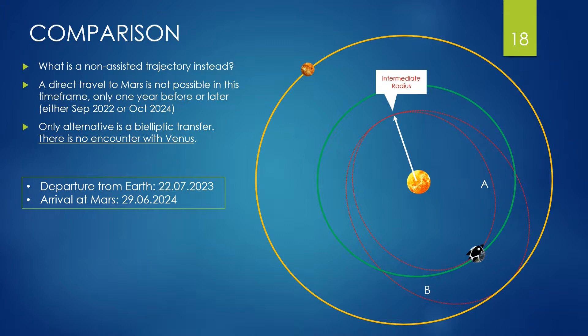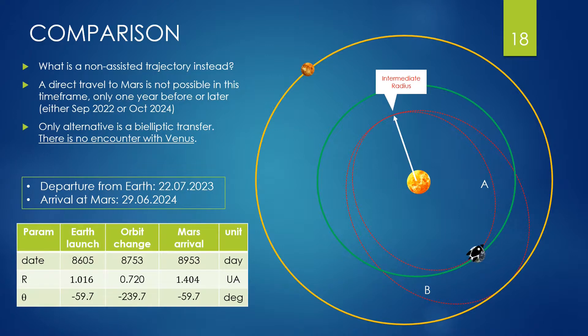The closest to our trip, I would say, and arrives on the 29th of June of the following year. The table of the position of the probe at launch, change, and arrival are also displayed here. Important to notice that here we are not encountering any planet, nor Venus nor any other one.